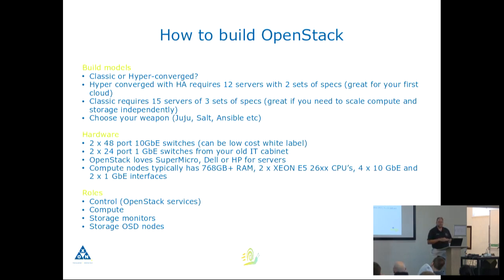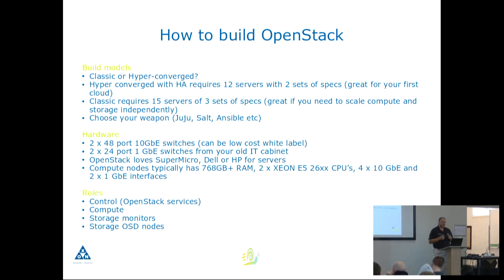Choose your deployment tool: Juju is used by Canonical, Salt by the SUSE Linux guys, and Red Hat uses Ansible. In terms of switching hardware, 48-port 10-gigabit Ethernet switches are what you need, and you can get commercial white-box switches for that. For out-of-band management, go dig up those 1-gig switches you threw away two or three years ago — they work fine.